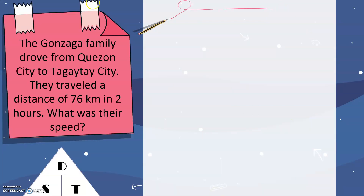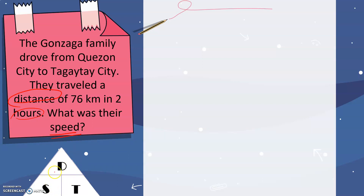Now let's go back to the problem we had earlier. The Gonzaga family drove from Quezon City to Tagaytay City. They traveled a distance of 76 kilometers — so we are given distance — in 2 hours, so we are also given time. The question is asking for their speed. Using the triangular figure, to look for speed we'll have distance over time.